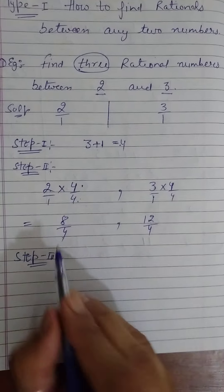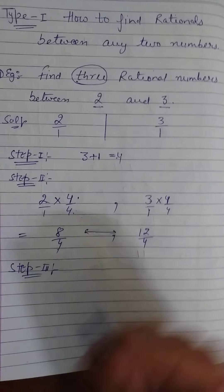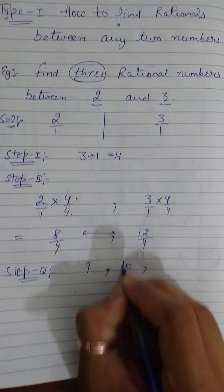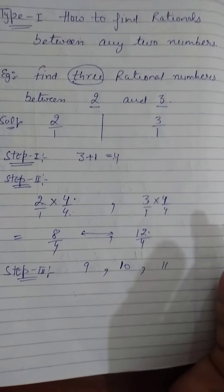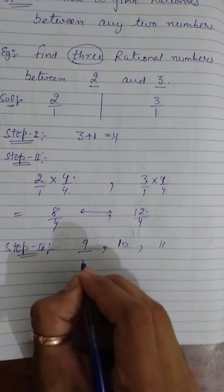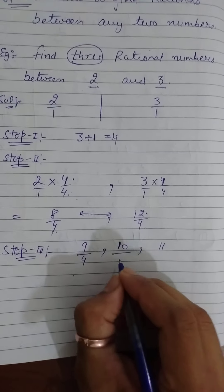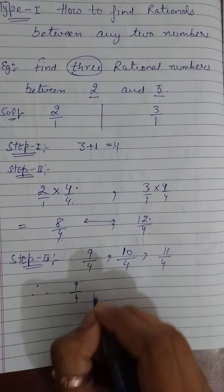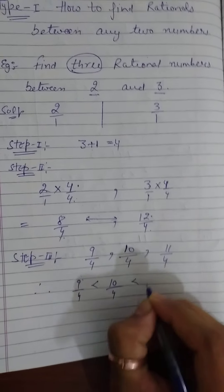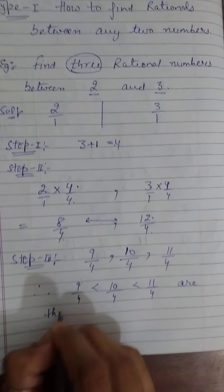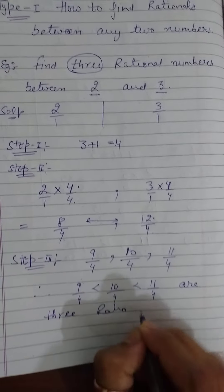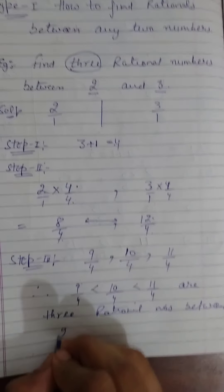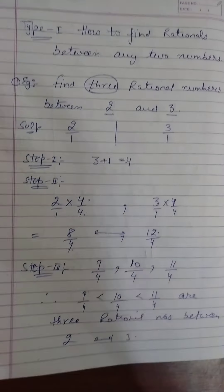Step 3: just count between 8 and 12. The number after 8 is 9, next is 10, next is 11. We do not include 8 or 12 themselves. Since both have denominator 4, the answer is: 9 over 4, 10 over 4, and 11 over 4 are 3 rational numbers between 2 and 3. Clear? That is your first example.